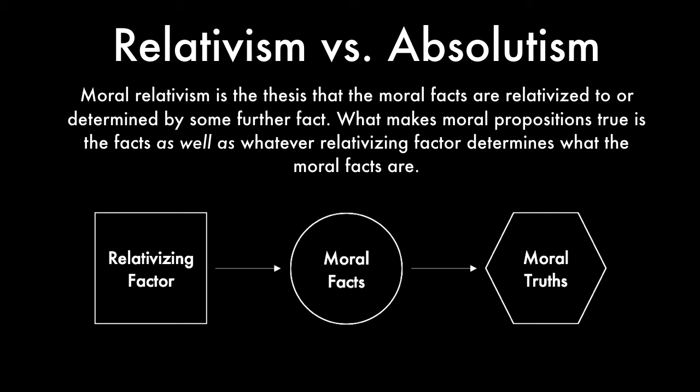Contrast this with relativism. Moral relativism is the thesis that the moral facts are relativized to, or determined by, some further fact. What makes moral propositions true is the facts as well as whatever relativizing factor determines what the moral facts are. So if you have different relativizing factors in different times, places, or cultures, those might give rise to different moral facts, which give rise to different moral truths. This is the heart of relativism.